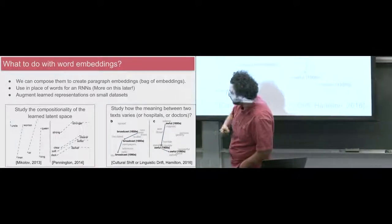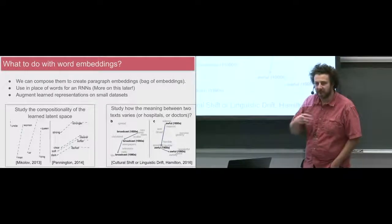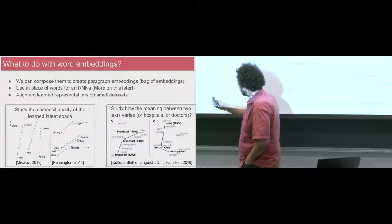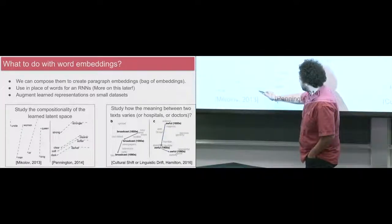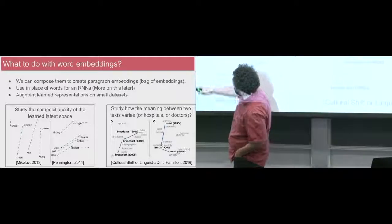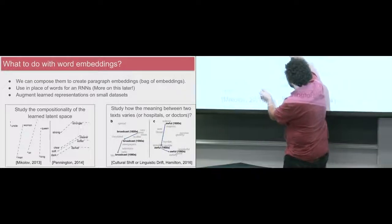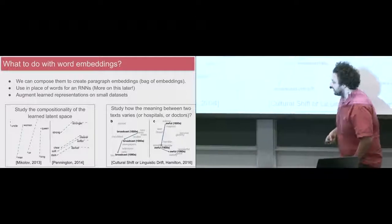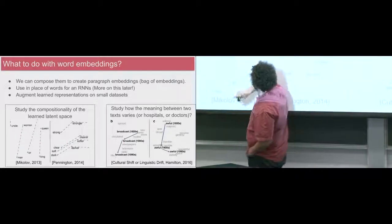The original Word2Vec paper from 2013 established the idea that you could do math on the vectors that represent words. You could say that the relationship between man and woman is really similar to the relationship between king and queen. If you took the vector between man and woman and applied it to king, you'd actually end up at queen. So if you take king and apply the same transformation, you'll get queen.